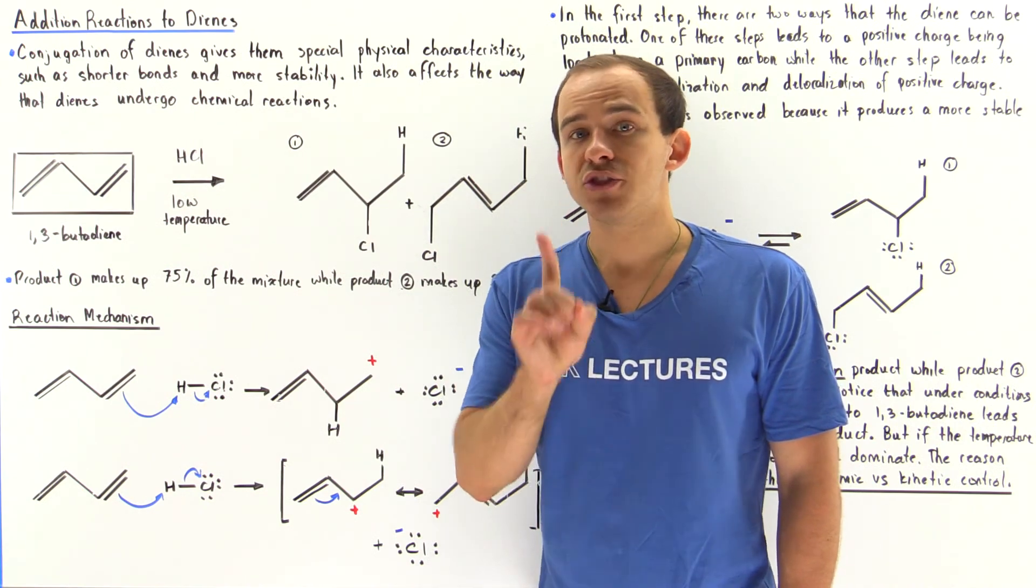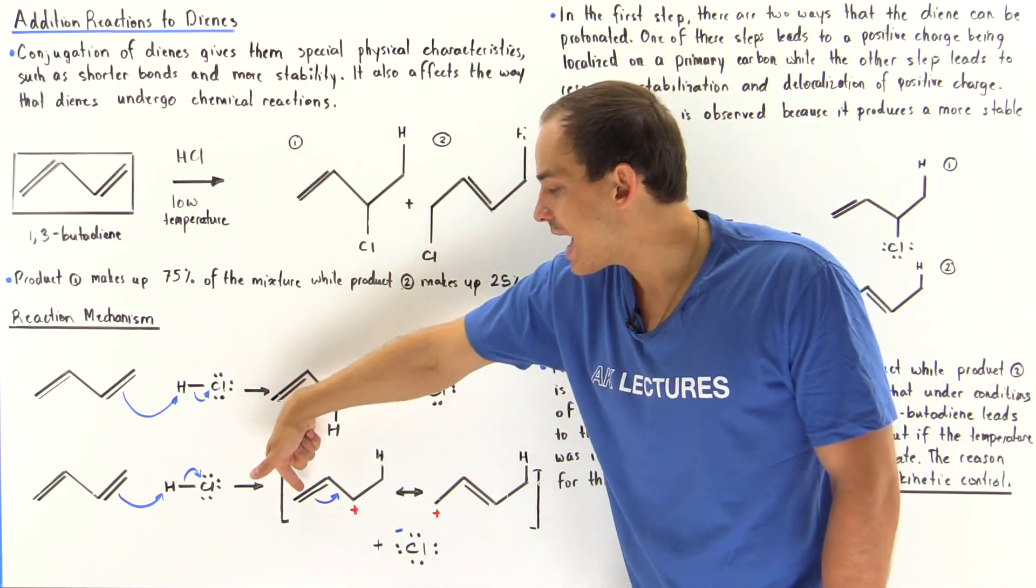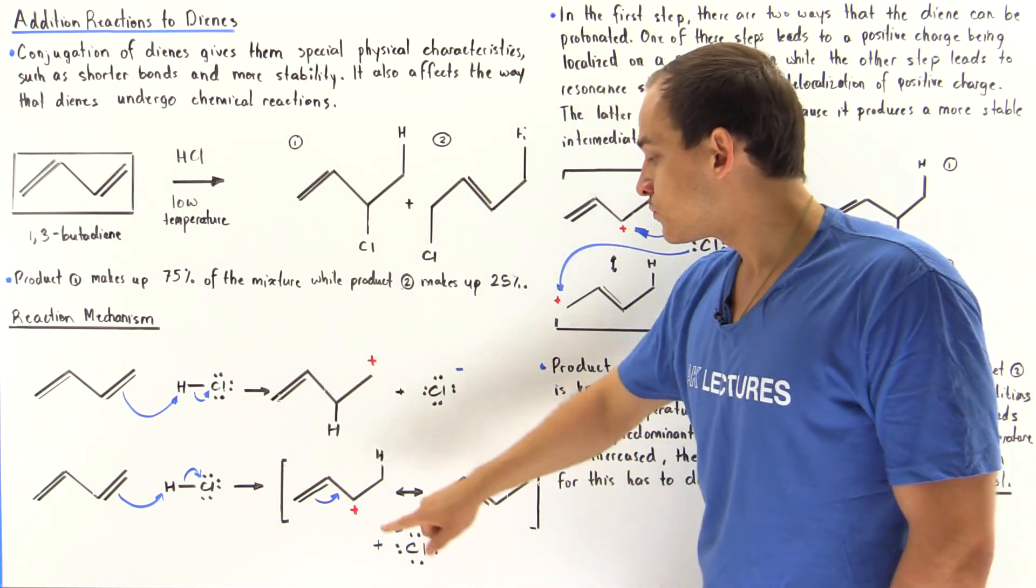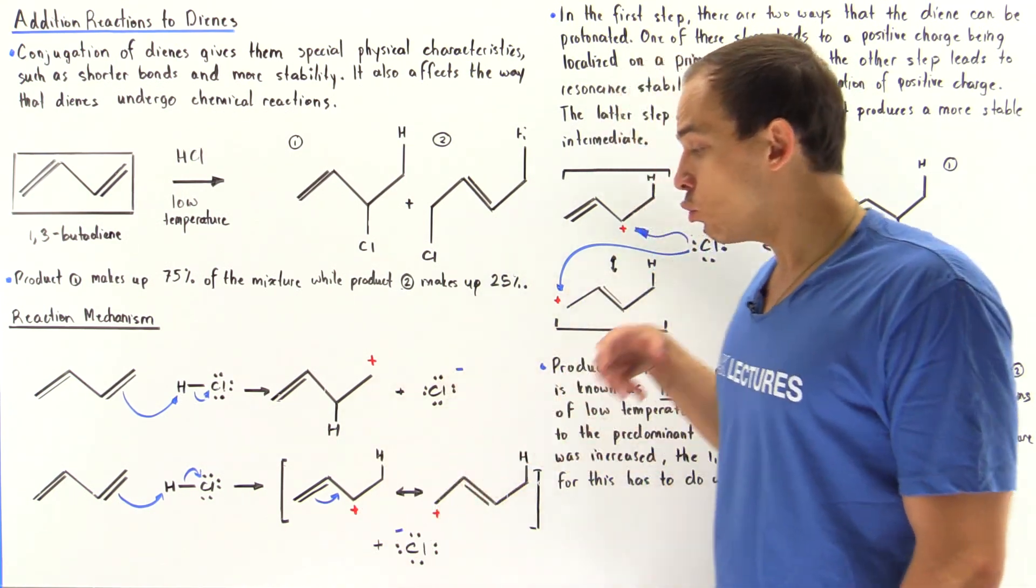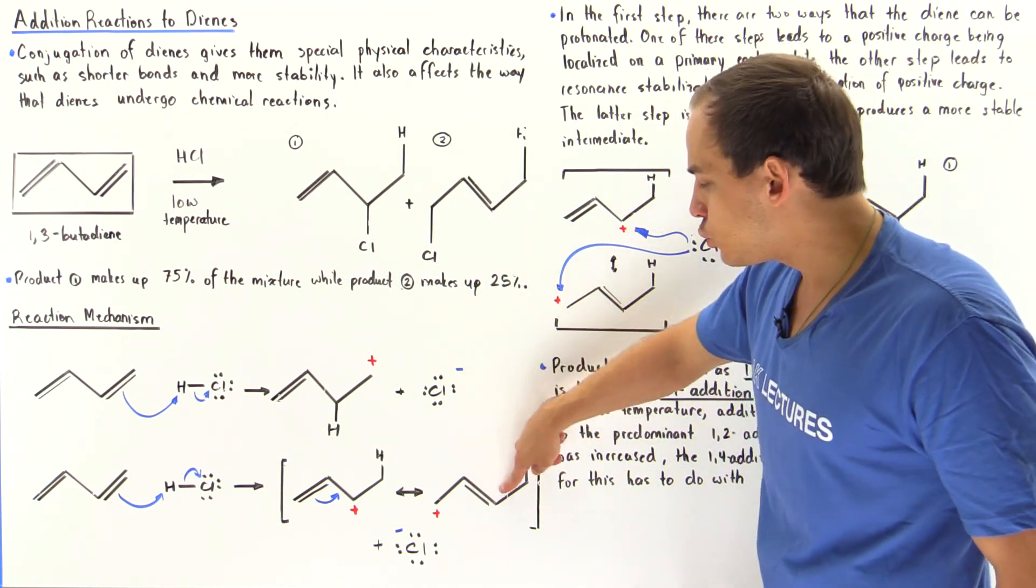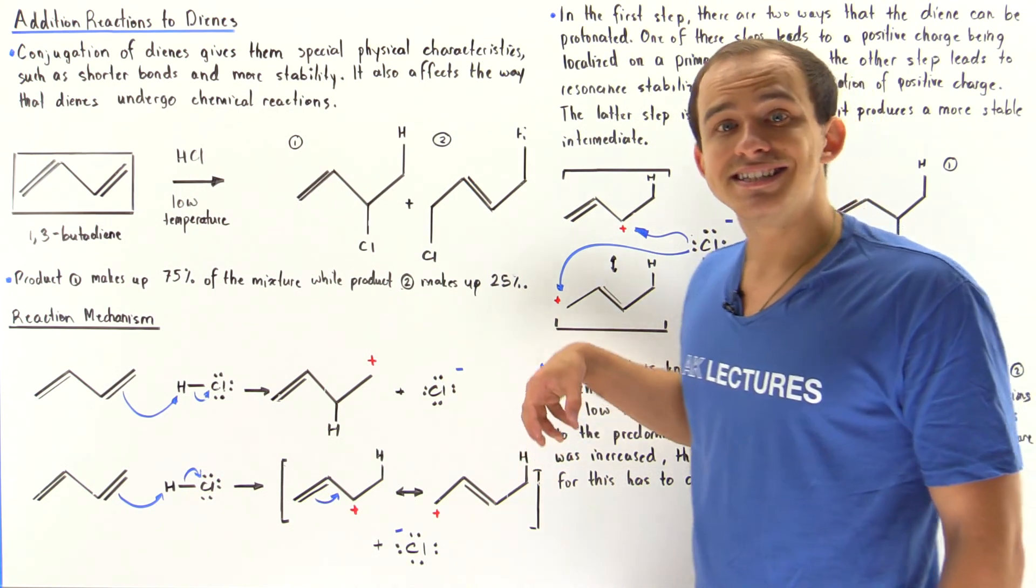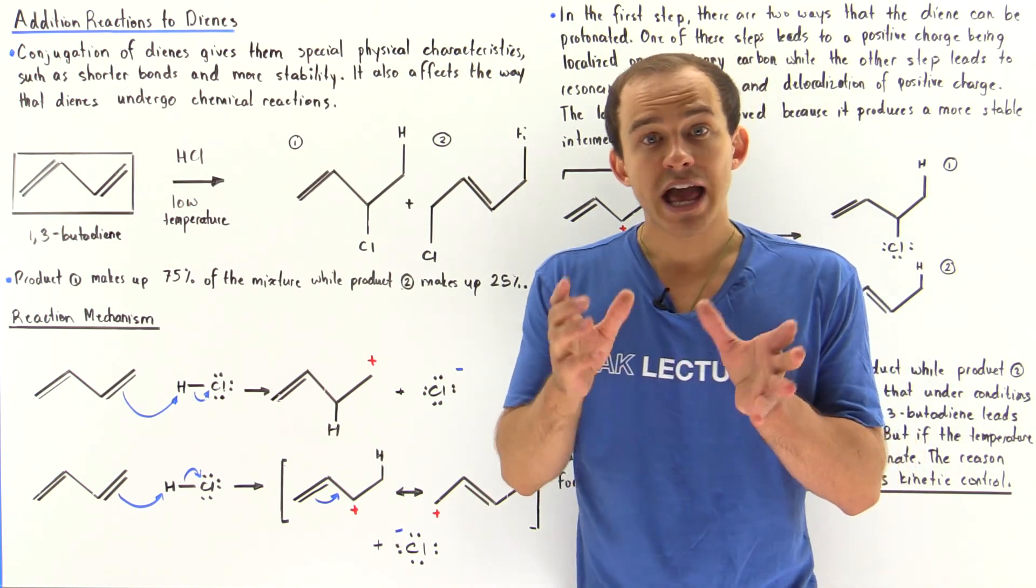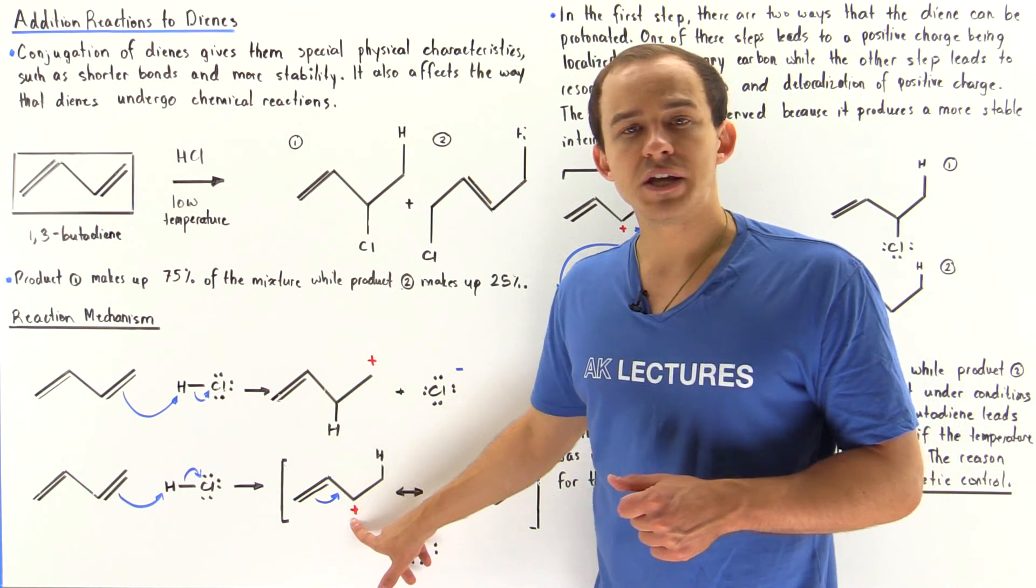But that's not the entire story. Because we have conjugation, because we have this pi bond that is in close proximity to this empty 2p orbital, to our positive charge, we see that the double bond can basically jump to this region here. This basically delocalizes the positive charge, and the positive charge now jumps back and forth between this position and this position.